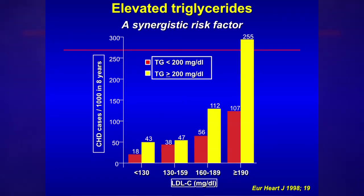Similarly, just as we talked about the independent relationship of HDL and LDL cholesterol in determining risk, we see the same thing for triglycerides and LDL. Even in individuals who have a normal-ish LDL cholesterol — less than 130 — if triglycerides are elevated greater than 200, those individuals have increased risk. And certainly individuals who have both elevated LDL cholesterol and elevated triglycerides have really very significant risk for the development of coronary heart disease.